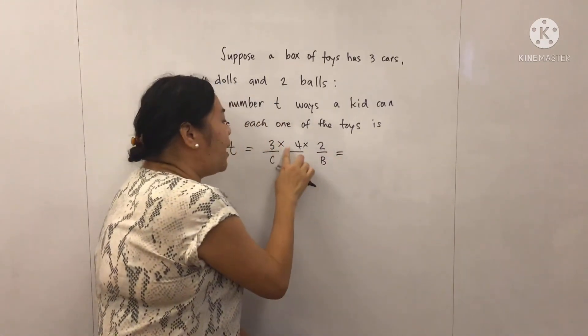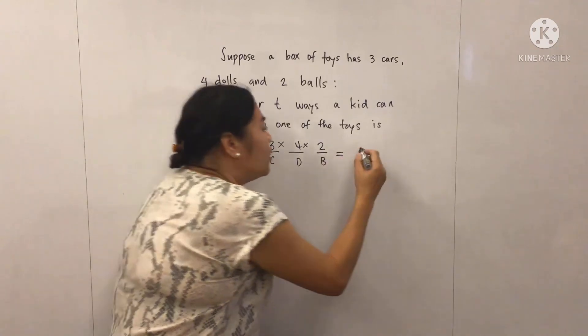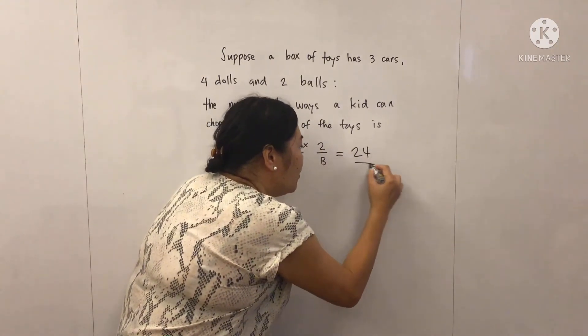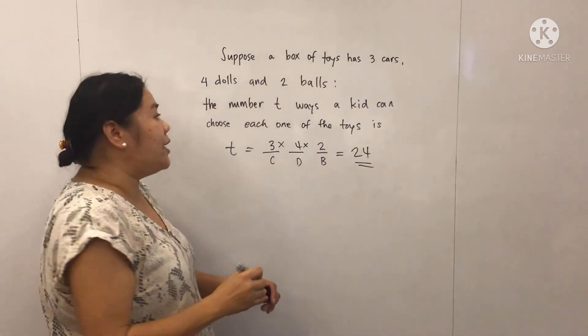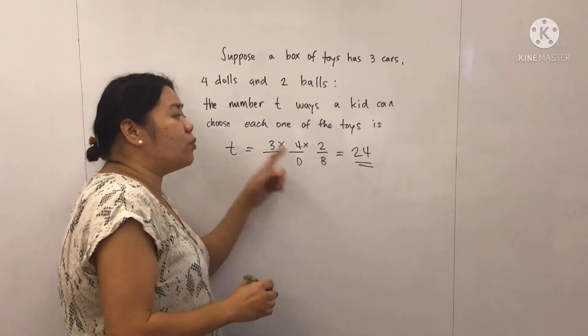So three times four is 12, times two is 24. So there are 24 ways a kid can choose each one of the toys.